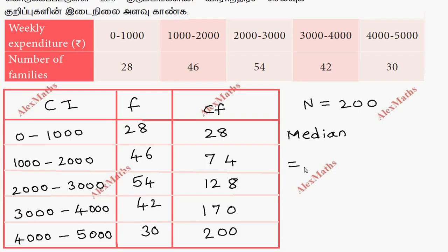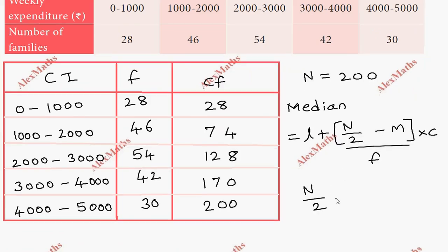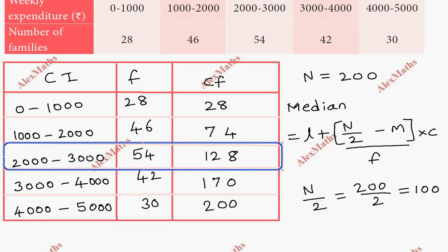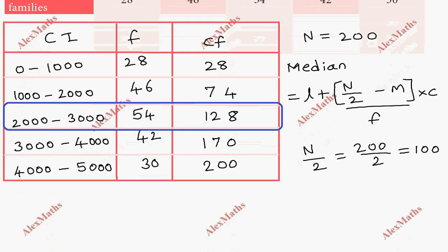The median formula is L plus N by 2 minus M divided by F into C. Total capital N by 2 is 200 by 2 which is 100.